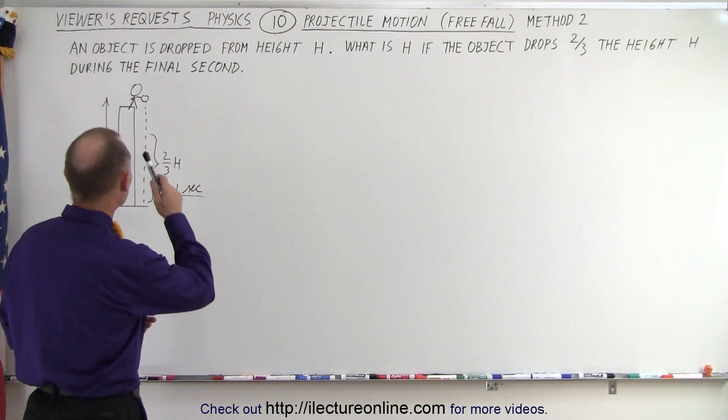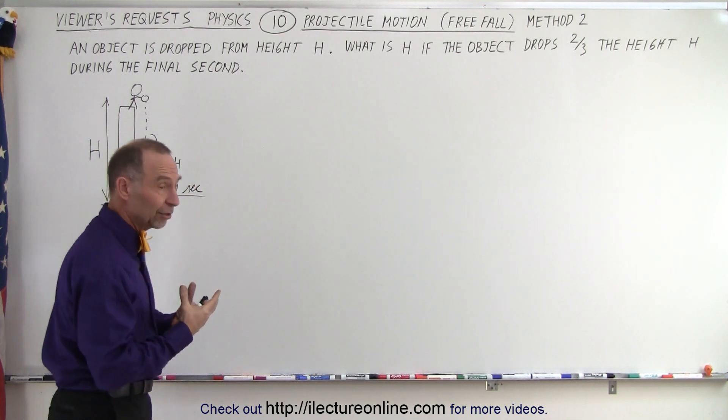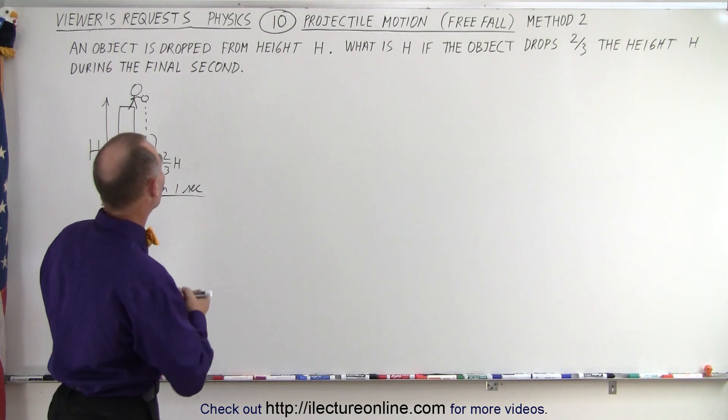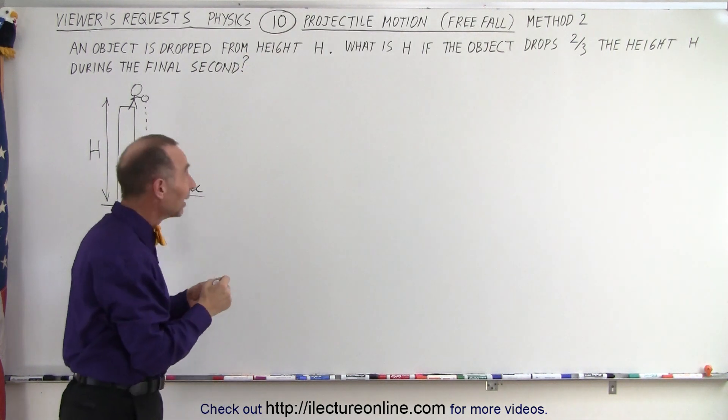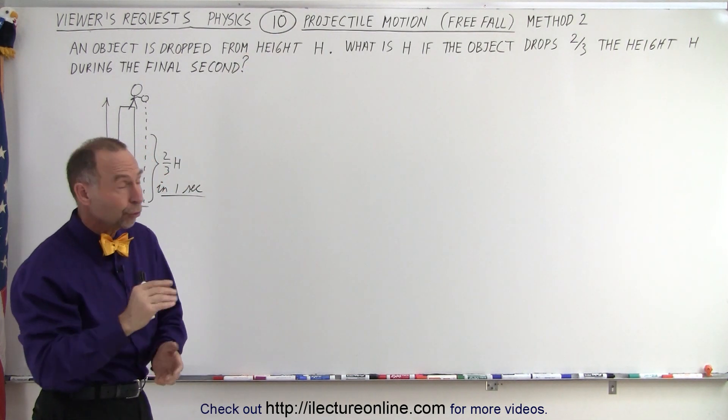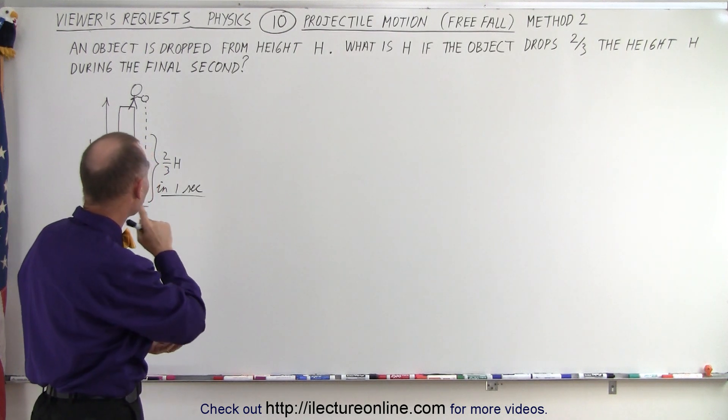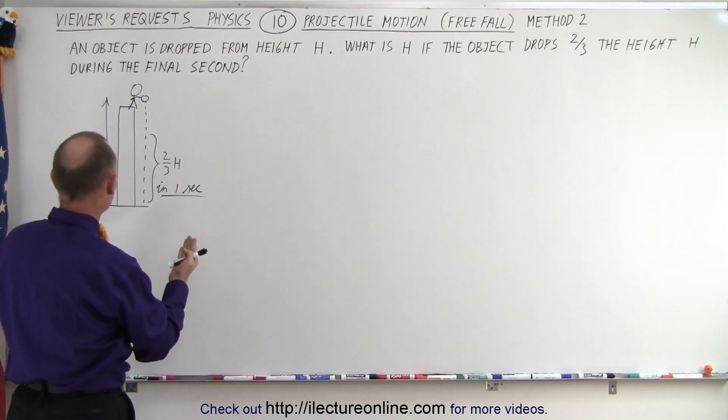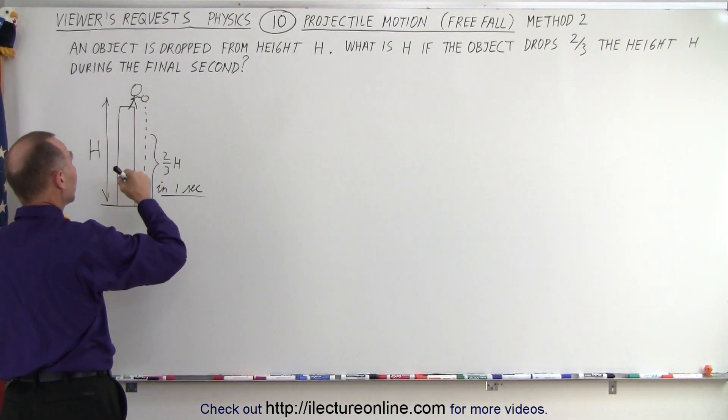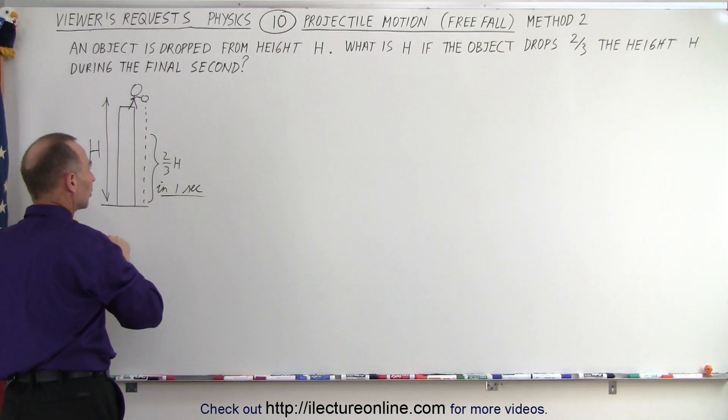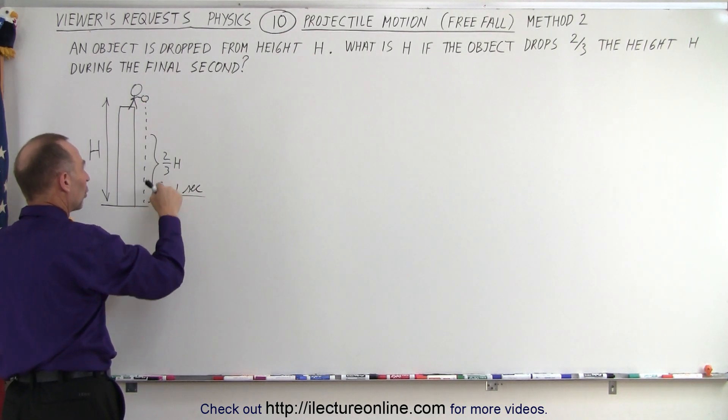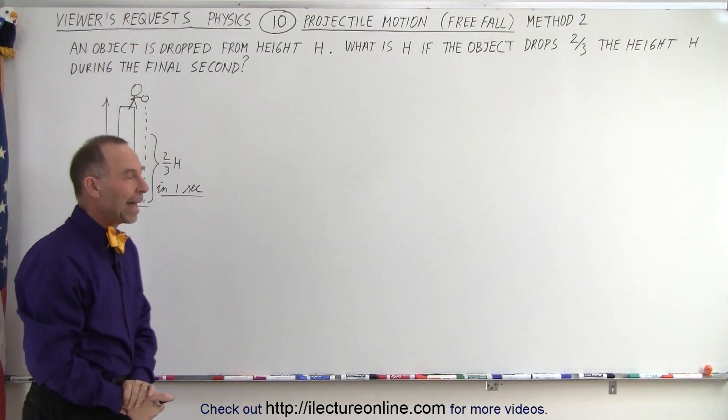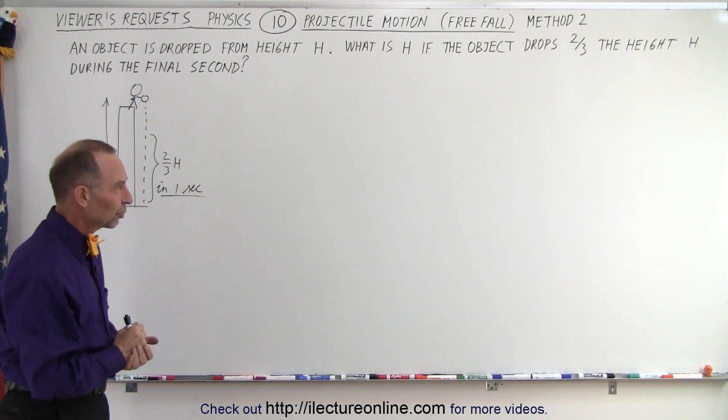Again, the problem reads as follows. An object is dropped from a certain height, let's call it h. The question is, what is h? I'll put a question mark in there. It says, what is h if the object drops two-thirds of the total height during the final one second? Okay, so graphically, this is what happens. We're up on top of a building, we don't know how high the building is. We drop an object, it falls down to the ground, and in one second, or it falls two-thirds of the total distance in the last one second of its path.